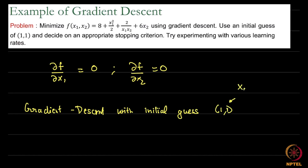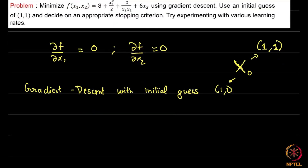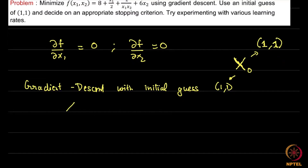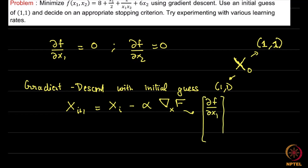Let us call this X0 — capital X0, to be consistent. Capital X0 has two sub-parts: 1 comma 1. We have the general formula: x_{i+1} equals x_i minus alpha times the gradient of f. In this case, the gradient with respect to x is composed of del f del x1 and del f del x2.